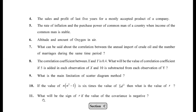Question 11: if covariance is negative, what will be the sign of R? Using the formula R = Cov(x,y)/(Sx·Sy): since Cov(x,y) is in the numerator and standard deviations are always positive, if covariance is negative then R will also be negative. This concludes Chapter 2 on correlation coefficient — keep practicing, and see you in the next chapter on regression.